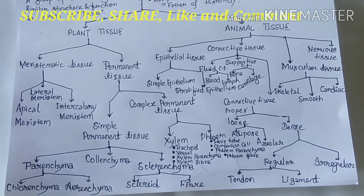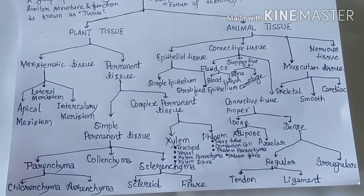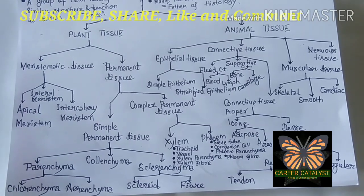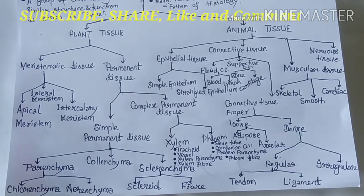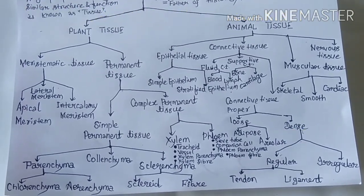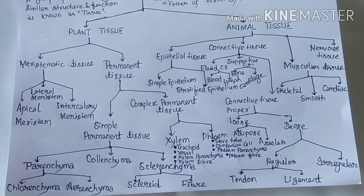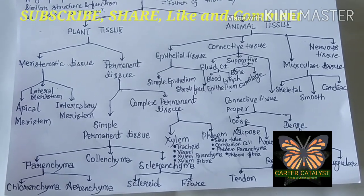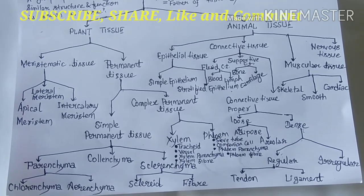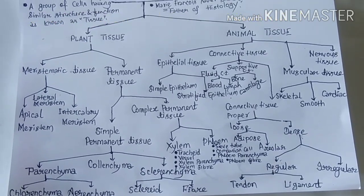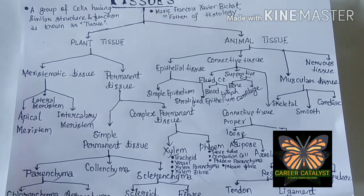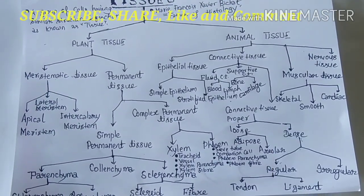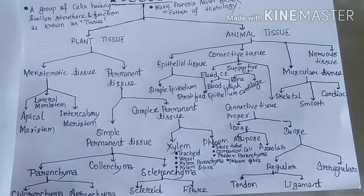Aerenchyma in aquatic plants like Hydrilla helps to create buoyancy so that any aquatic plant can easily float on the water surface. We will study parenchyma in detail later. Collenchyma is similarly another type of simple permanent tissue. It helps to maintain the tensile strength of plant parts, load-bearing capacity, and provides mechanical support.